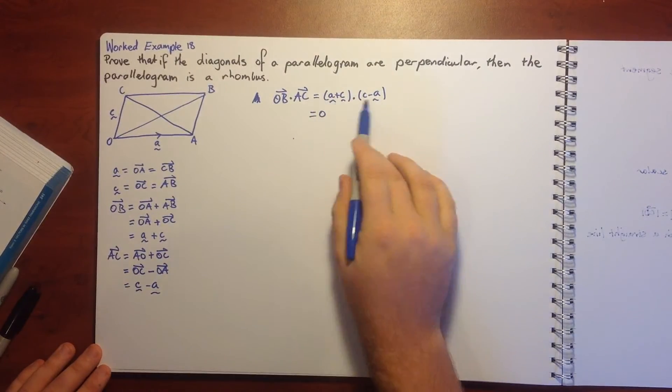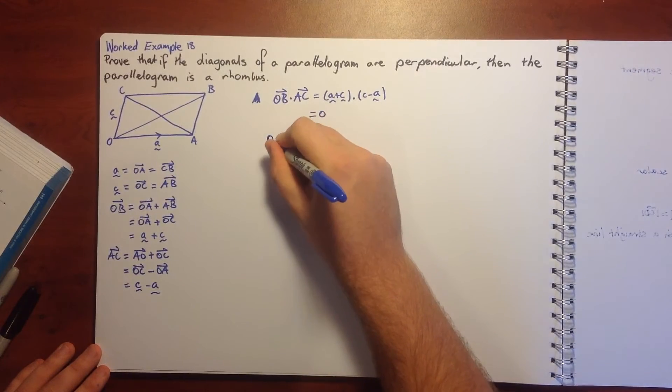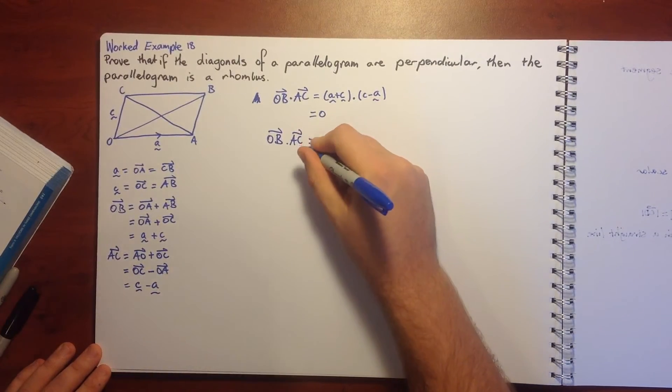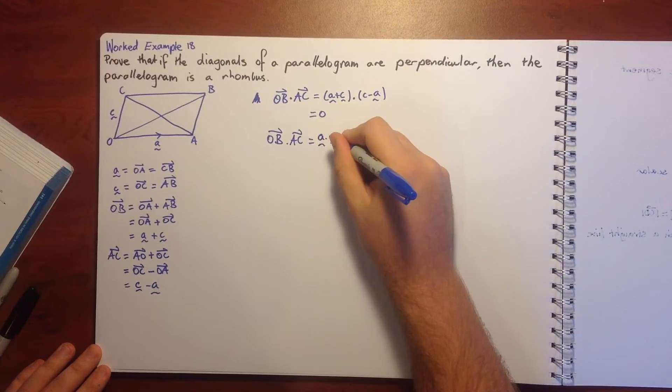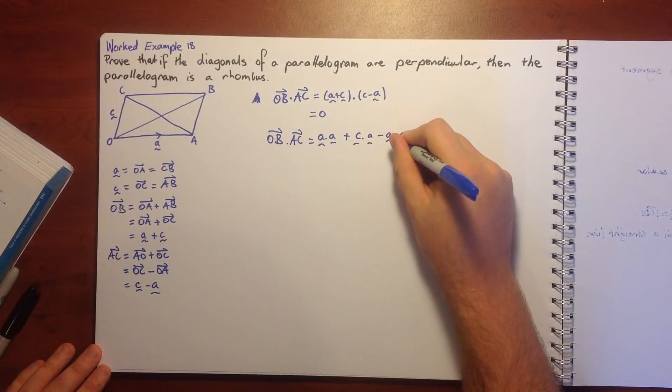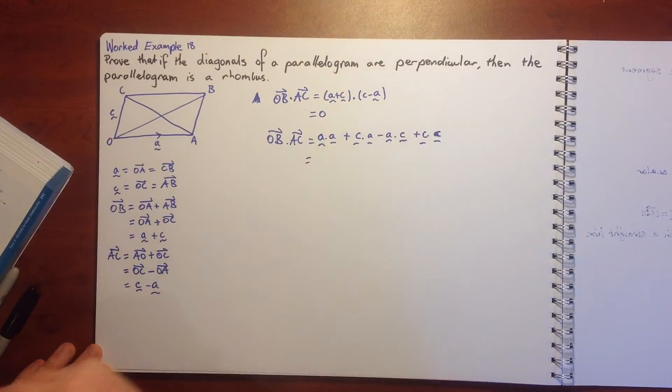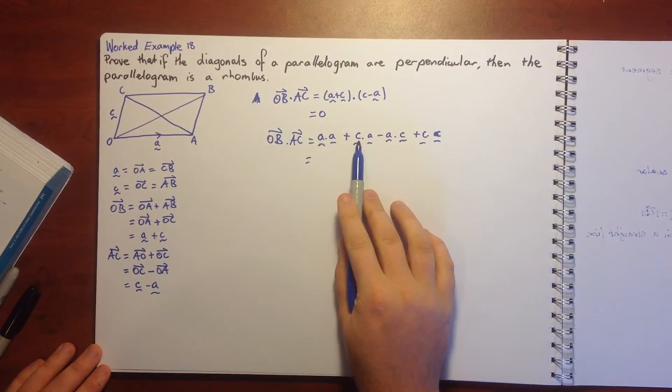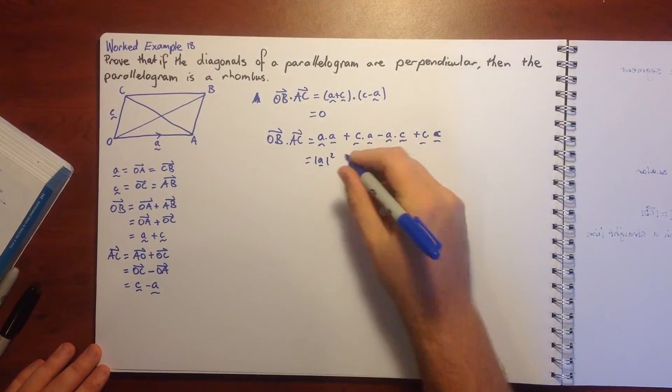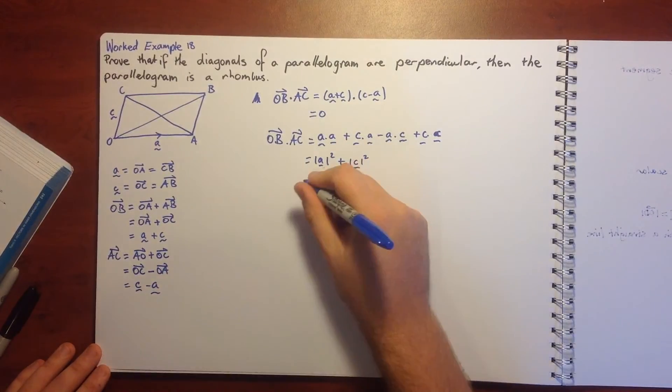We can expand our brackets and say we're going to get A dot C, we're going to get an A dot A, and a C dot C, and minus A dot C. Well, C dot A is going to be the same as A dot C, so they're going to cancel out. And A dot A is the magnitude of A squared, and C dot C is the magnitude of C squared. And again, we know that equals zero.